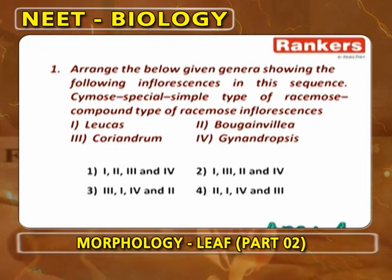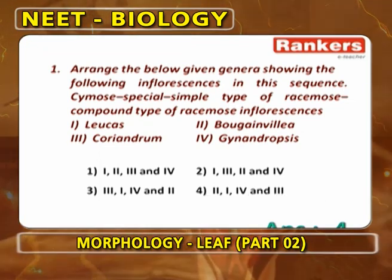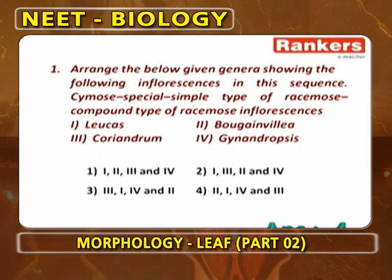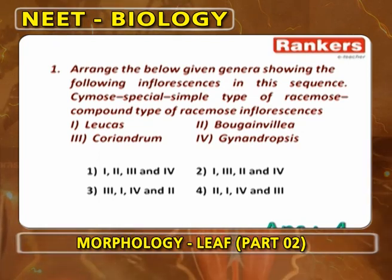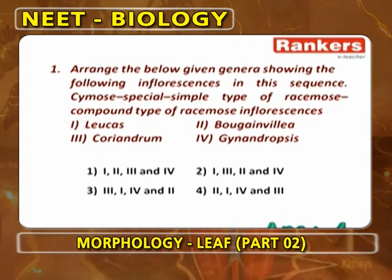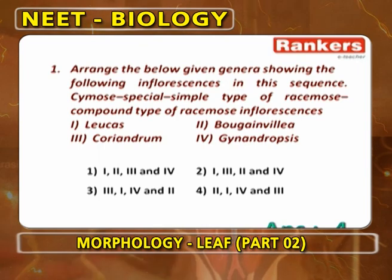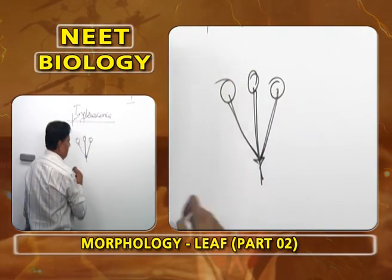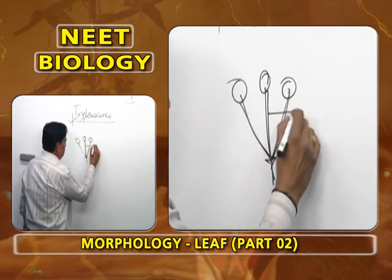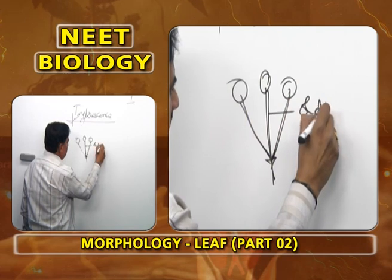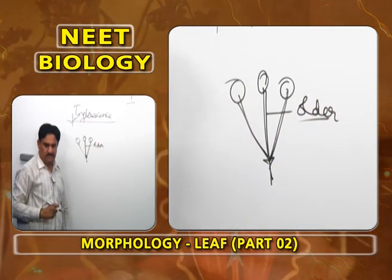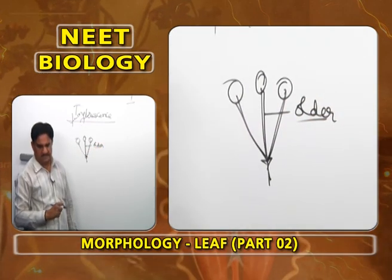Cymose inflorescence is 2, Bougainvillea. In cymose, simple cyme or cymule is present. The peduncle grows definitely and ends as a flower. From the lower side, two lateral branches develop and they also become flowers. The growth stops and the central flower is the older flower. So, cymose inflorescence is Bougainvillea.